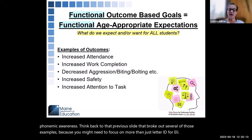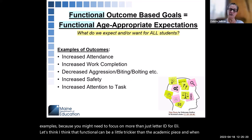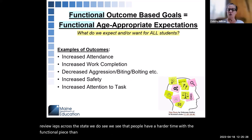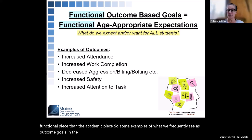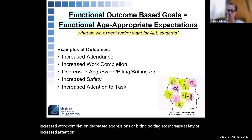Let's think functional. Functional can be a little trickier than the academic piece, and when we review IEPs across the state, we do see this — people have a harder time with the functional piece. Some examples of what we frequently see as outcome goals in the functional section would be increased attendance, increased work completion, decreased aggressions or biting, bolting, increased safety, or increased attention to tasks. We see these quite a bit.